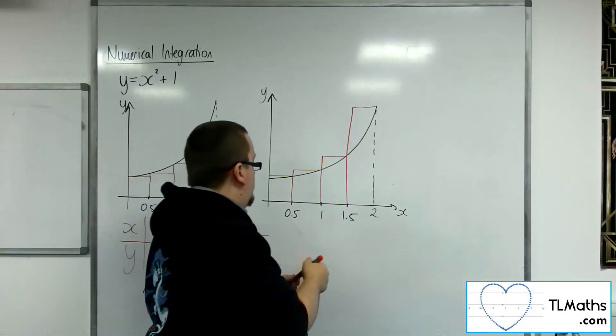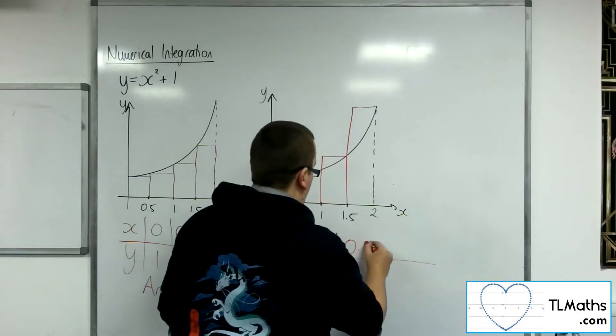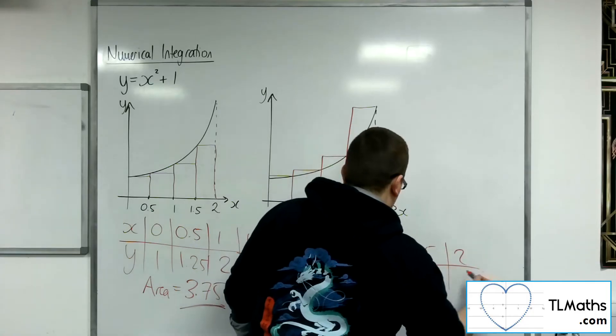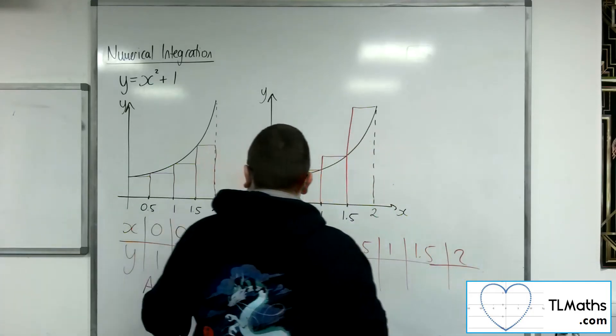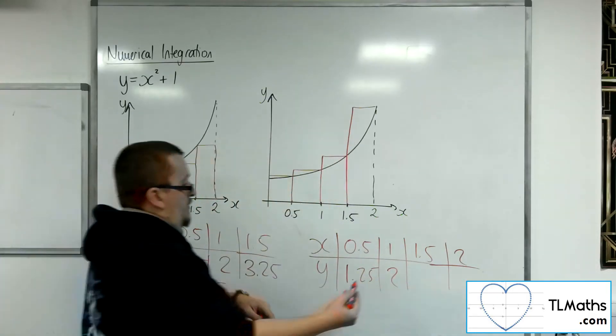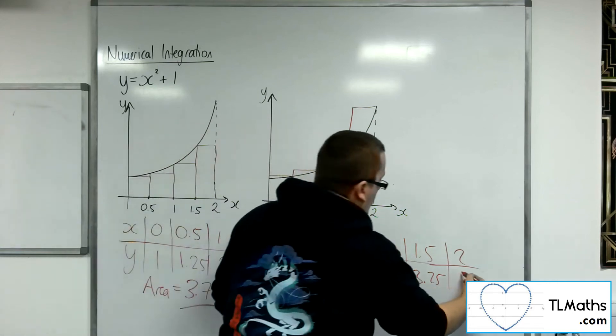So, instead, I'll have x's and y's. Some of these I've already got, so 0.5, 1, 1.5, 2. So, 0.5 I already know, so 1.25, 2, and then 3.25. And we've got 2 squared plus 1, so 5.